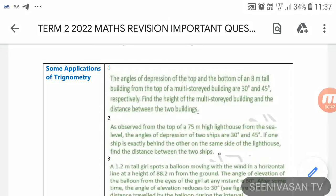Look at the second question. As observed from the top of a 75 meter high lighthouse from the sea level, the angle of depression of two ships are 30 degrees and 45 degrees. If one ship is exactly behind the other on the same side of the lighthouse, find the distance between two ships.